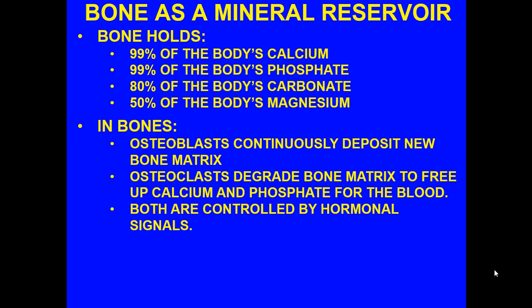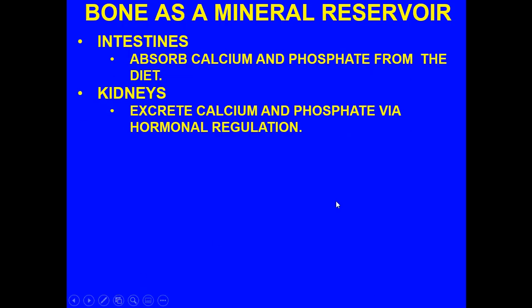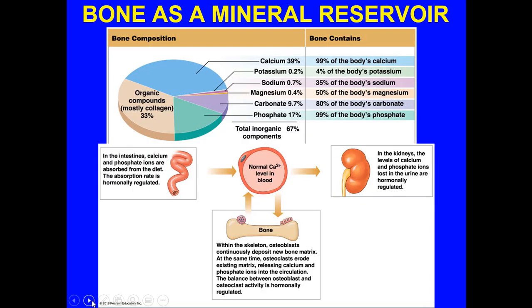Bone holds 99% of the body's calcium and phosphate, 80% of the body's carbonate, and 50% of the body's magnesium. In bones, osteoblasts continuously deposit new bone matrix while osteoclasts degrade bone matrix to free up calcium and phosphate for the blood — both controlled by hormonal signals. The intestines absorb calcium and phosphate from our diet, and the kidneys excrete them via hormonal regulation. We have to maintain a certain normal level of ionic calcium present in our blood at any time, and the reservoir of calcium in many cases is the bone.